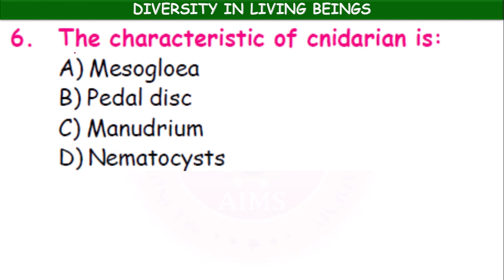The characteristic feature of cnidarians is nematocysts — not mesoglea, pedal disc, or manubrium. Nematocysts are special kinds of cells. Cnidarians use these cells for defense and to paralyze their prey.